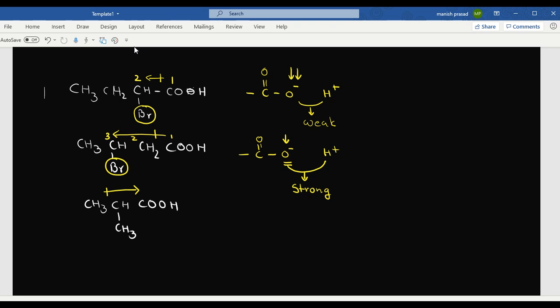CH3 donates electrons. Electron density increases. Electron density increases means the bond between negative and positive becomes a strong bond. Now what is an acid? An acid is that which can release H plus easily.